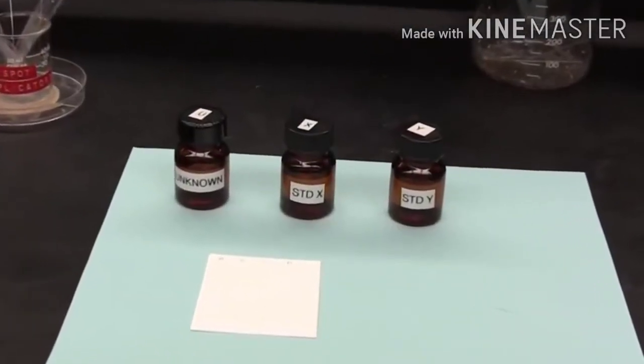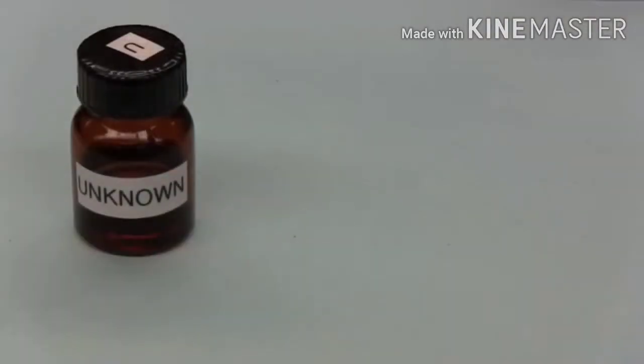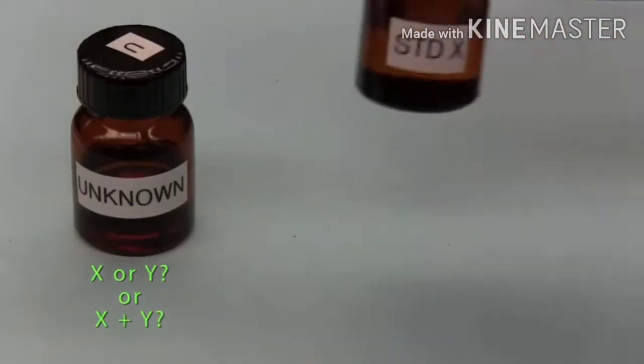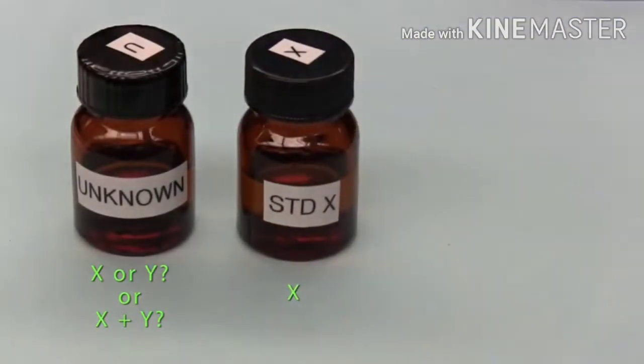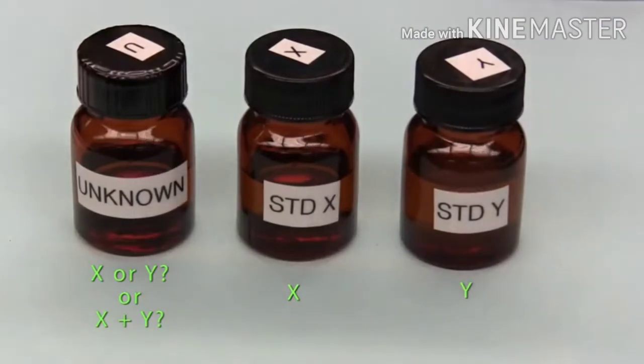In this demonstration, we are going to see how to separate and identify using TLC. In this bottle, the identity of the contents is unknown, but we do know that it contains either compound X or compound Y, or even a mixture of both. In this bottle, we have an authentic sample of compound X, a sample which we know beyond any doubt is compound X, so we call it standard X. This is our first reference. In this bottle, we have an authentic sample of compound Y, a sample which we know beyond any doubt is compound Y, so we call it standard Y. And this is our second reference.